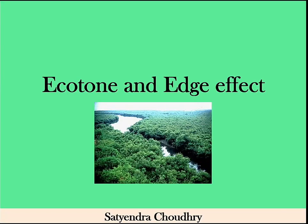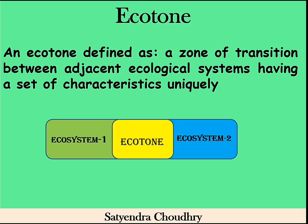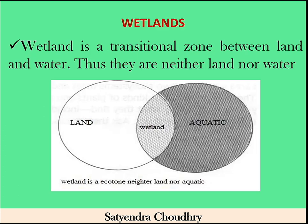In this video we will learn about the concept of ecotone and edge effect. Ecotone is a transition zone between two ecological systems having unique characters. Biological diversity is very high in ecotones, but ecological function for a particular ecosystem is degraded in these areas. Ecotone never represents the unique features of ecosystem one or ecosystem two.